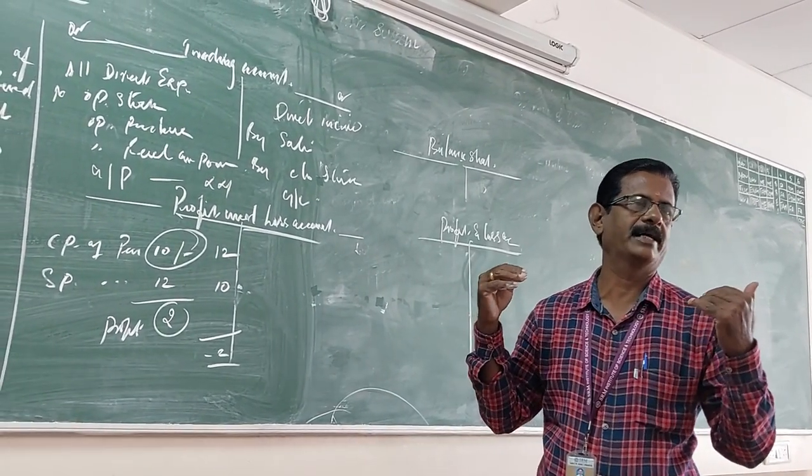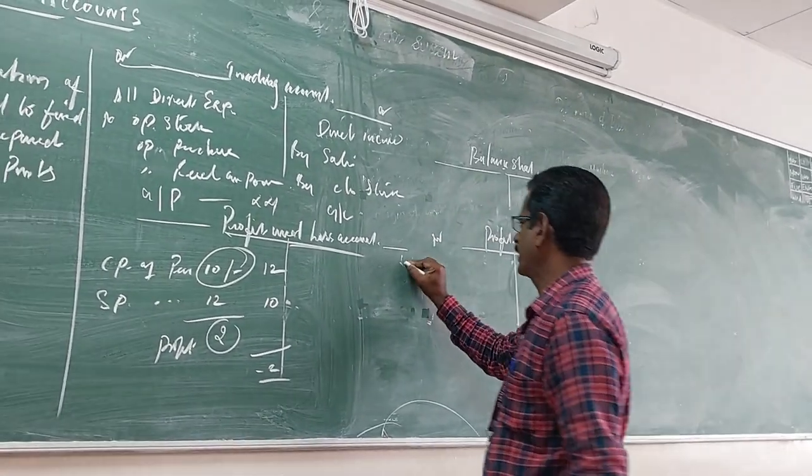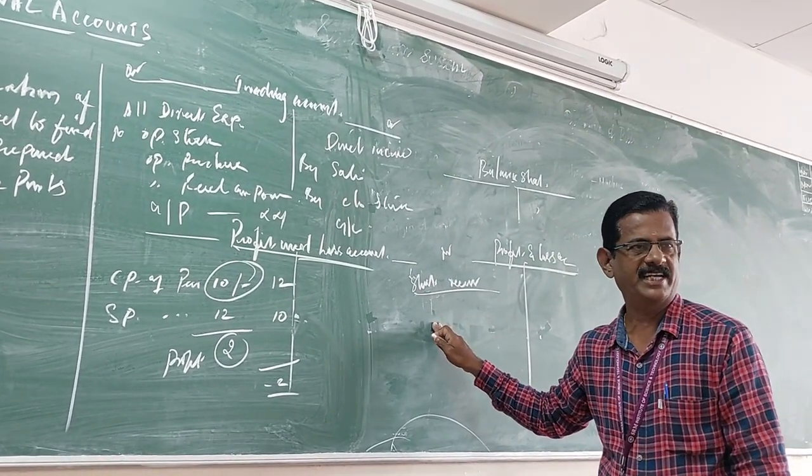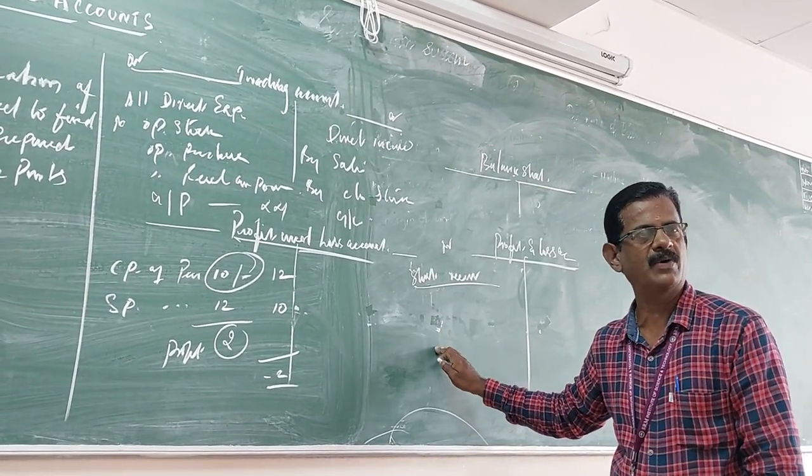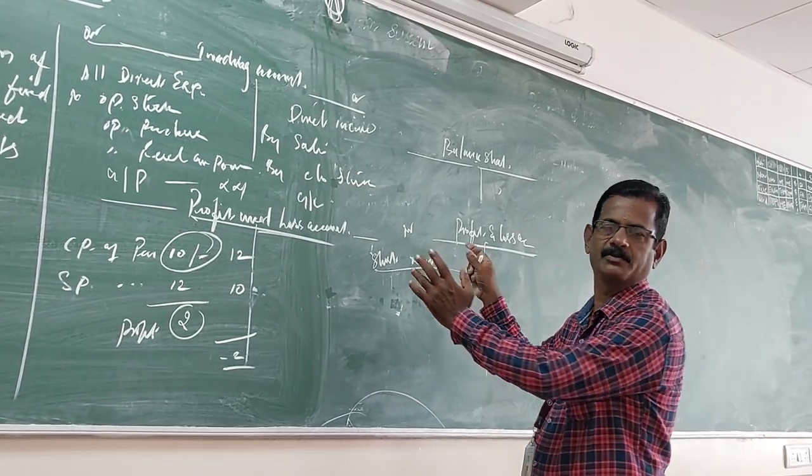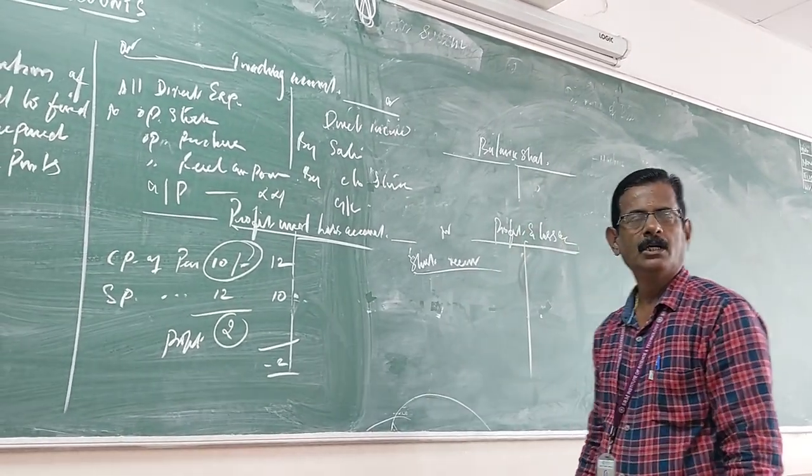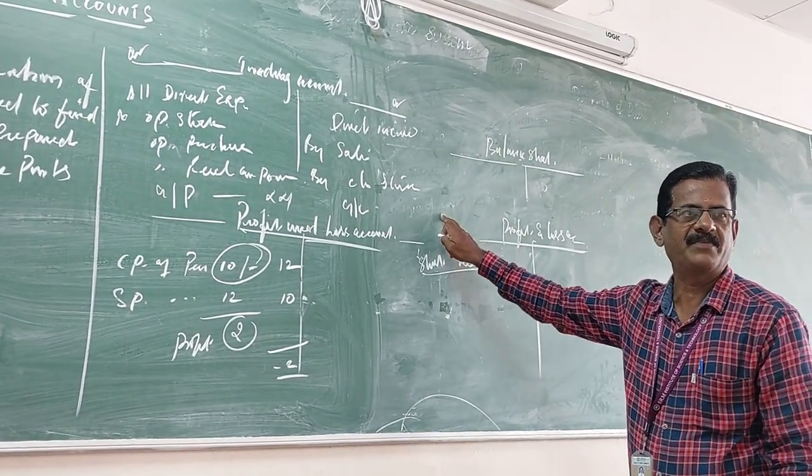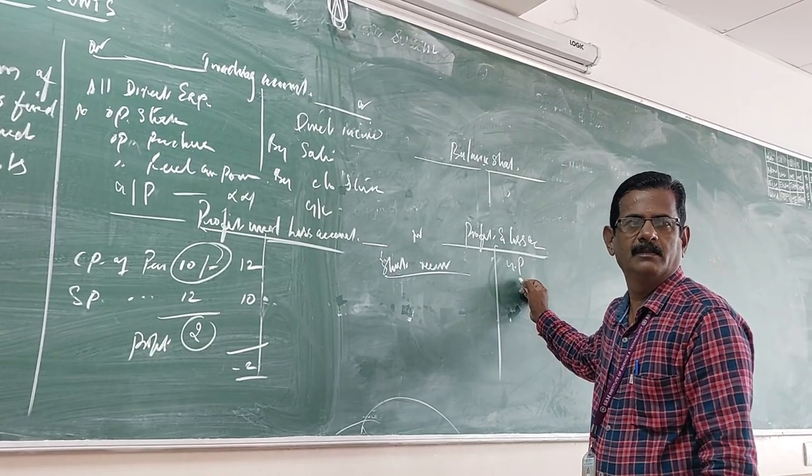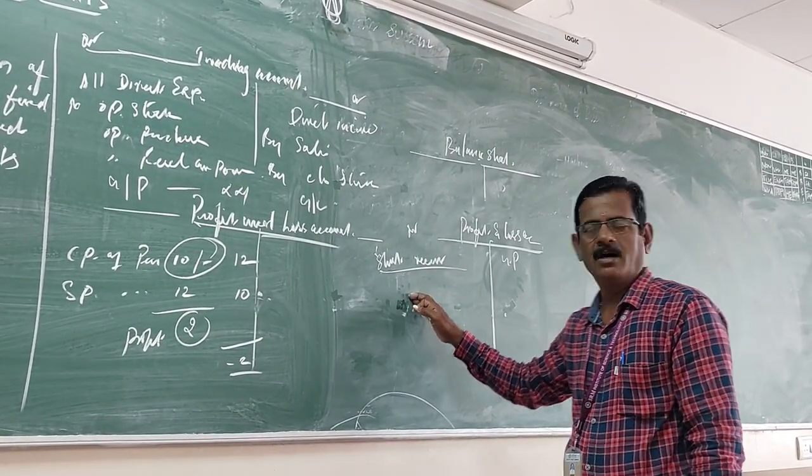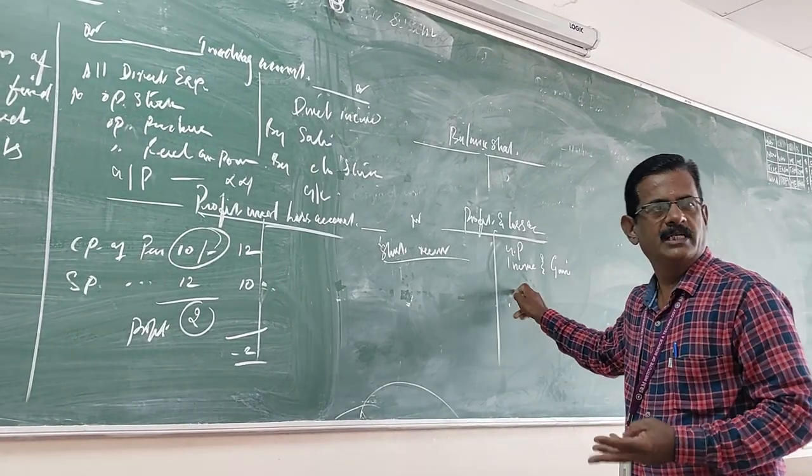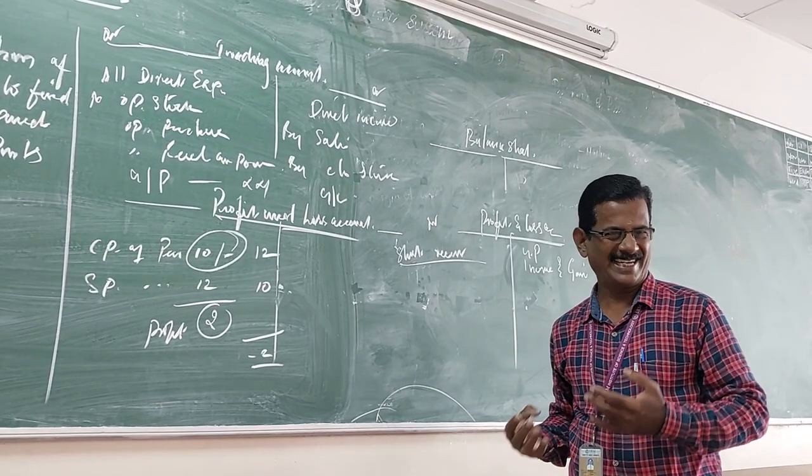Profit and loss account - the rule is debit all expenses and losses, credit all income and gains. Debit side should record all expenses and losses, for example rent payment, commission payment, discount payment, interest payment, depreciation charge, bad debts. The credit side, the gross profit is here, then all income should be recorded - rent received, commission received, discount received, interest captured.